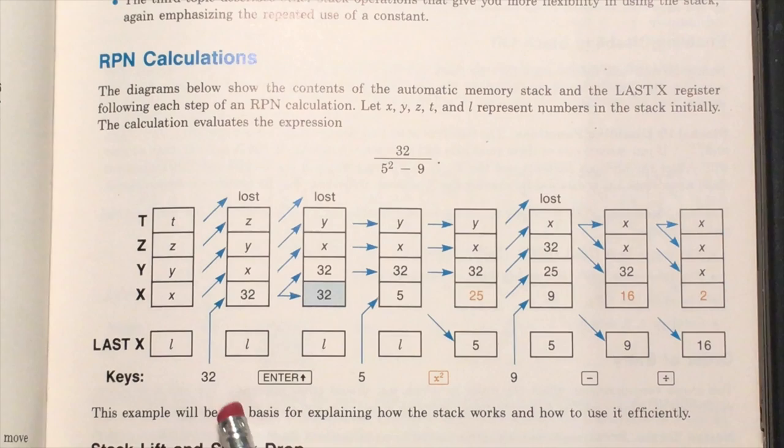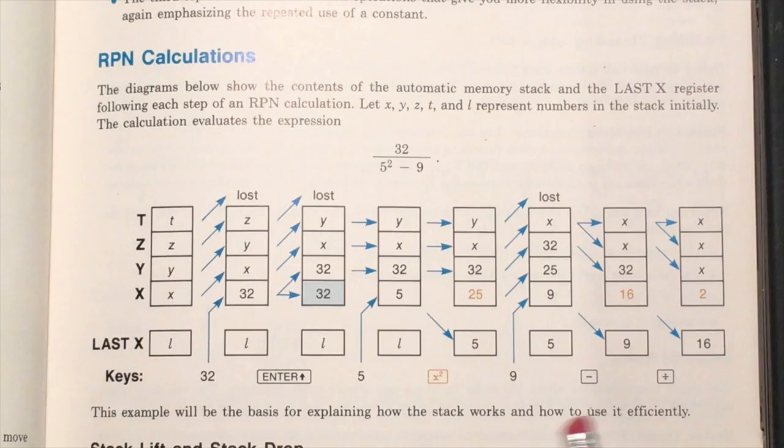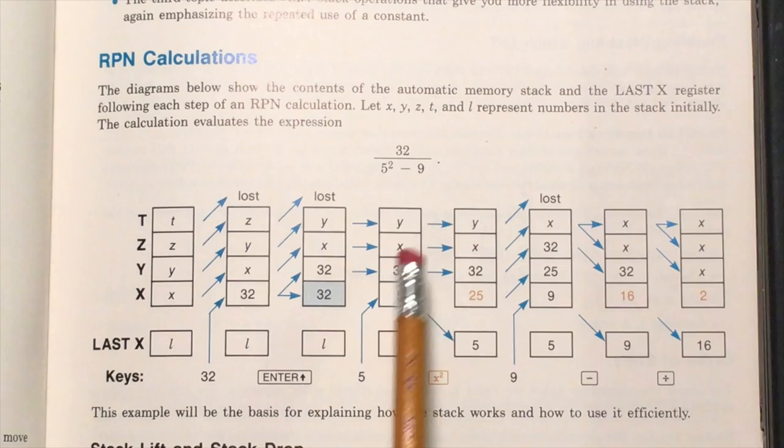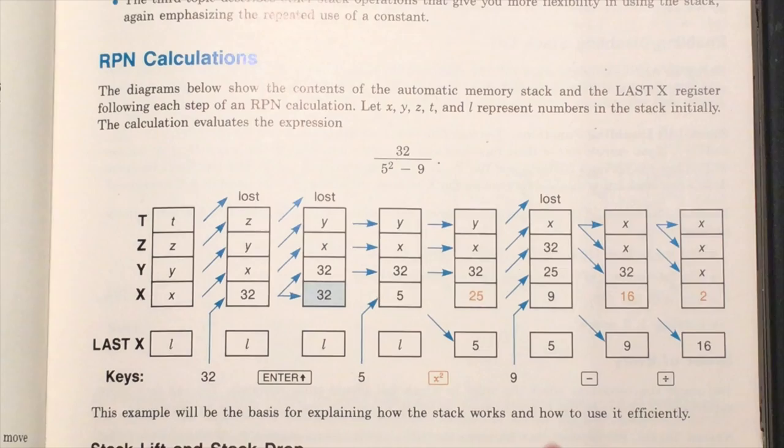This is what I was talking about when I say the operator is on the right and the operands are on the left. For example, to take 5 squared, you do 5 and then on the right is the squared. Then you enter 9, and on the right of that is minus. Finally, you do divide, which is on the right of all this. You can do these calculations without ever entering any parentheses or equal signs, and the longer the calculation, the more keystrokes you save using this type of notation.